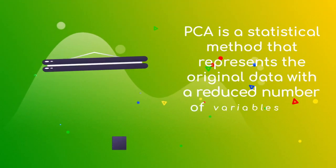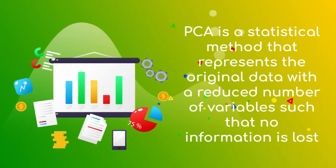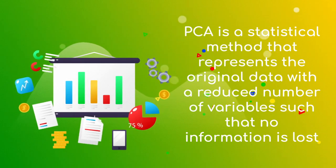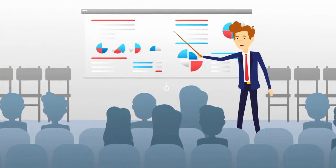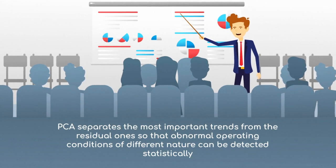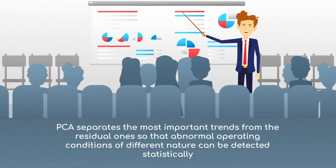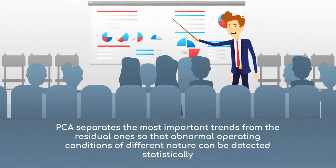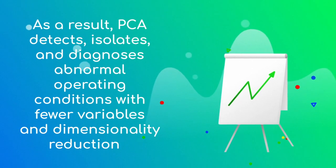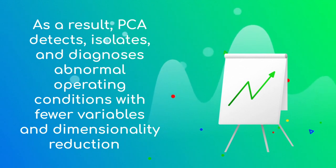PCA is a statistical method that represents the original data with a reduced number of variables, such that no information is lost. PCA separates the most important trends from the residual ones, so that abnormalities of different nature can be detected statistically. As a result, PCA detects, isolates and diagnoses abnormalities with fewer variables and dimensionality reduction.